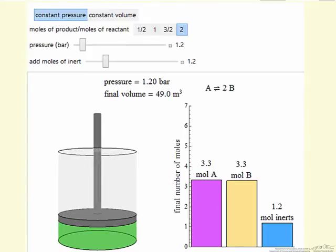The idea here is to observe the effect of adding an inert, and you should understand why that's going to affect the reaction and how it will have a different effect if it's A goes to B or A goes to 1/2 B instead of 2B.